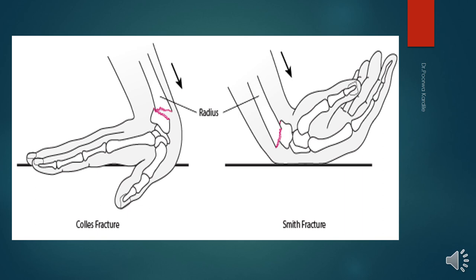Other causes of Colles' fracture include osteoporosis, trauma, elderly people, low muscle mass, or decreased levels of vitamin D or calcium.